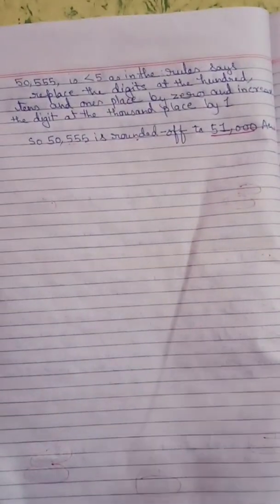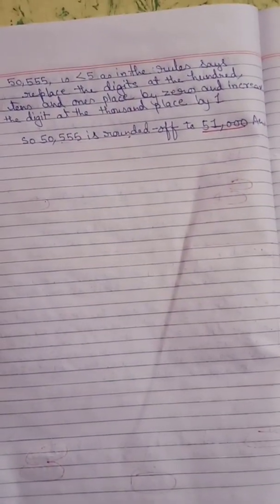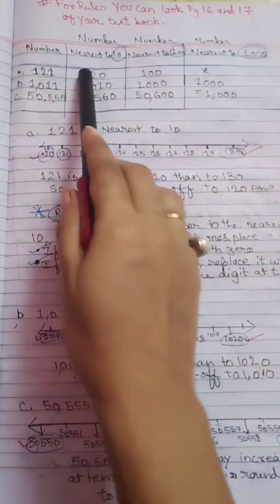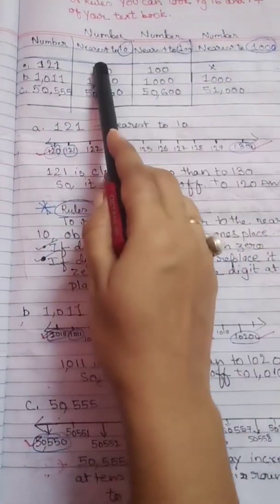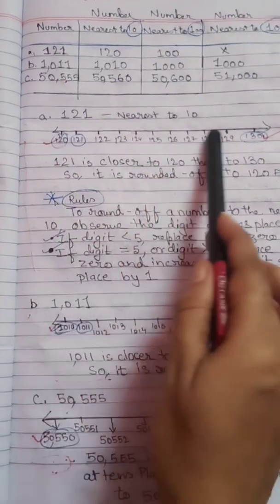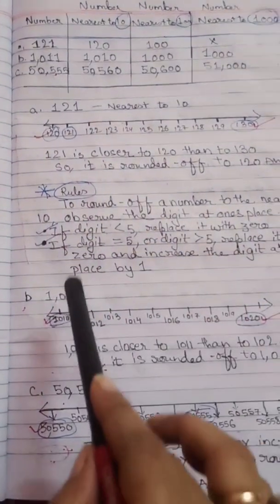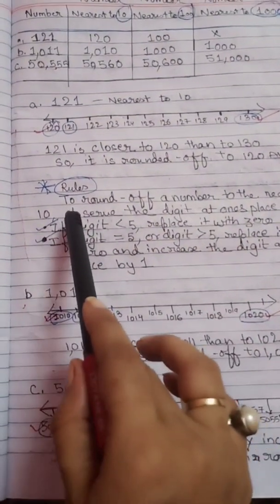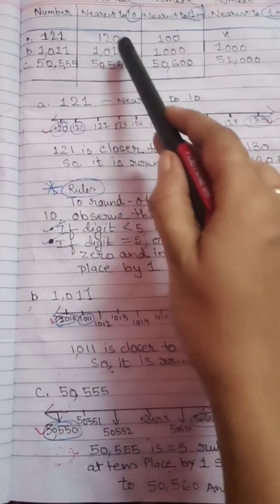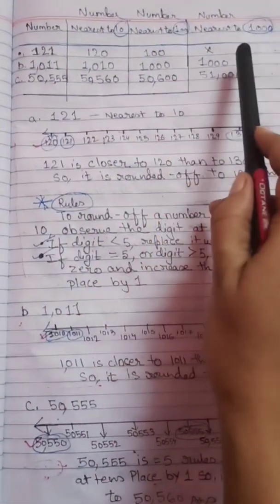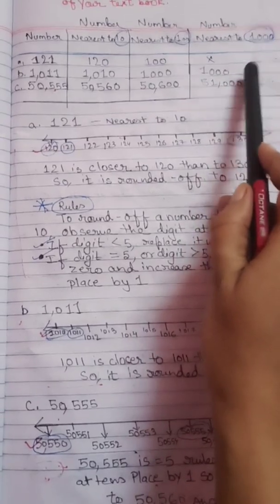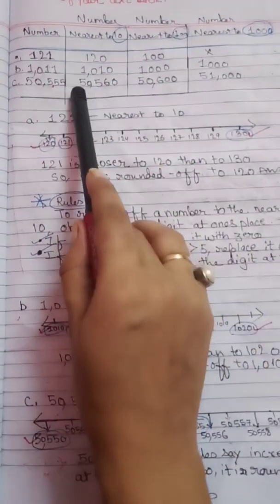In this way we can solve our rounding table easily. You can draw a table and solve your sums or directly apply rules 1 and 2 — nearest to 10, nearest to 100, and nearest to 1000. I am very clear with ones, tens, and hundreds. Hope you are able to understand the concept.